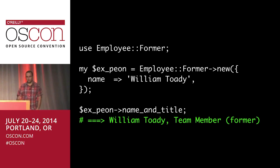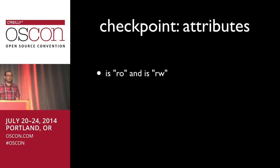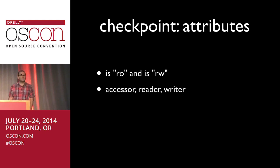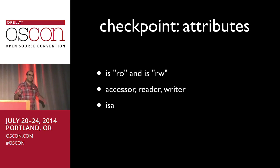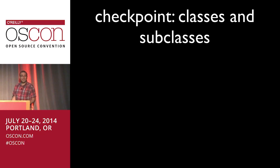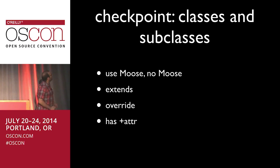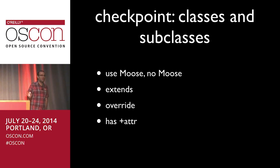Let's quickly go over attributes again. You can say they're read-only or read-write — you'll use that all the time, just pick one and move on. You can give them all kinds of behaviors like accessors, readers, writers, and type constraints by saying it has to be like an integer or a string. You can say whether or not they're required. You want to build a class? Use Moose. Want to make a subclass? Use 'extends.' Override and 'has +' let you specialize methods and attributes in the subclass.